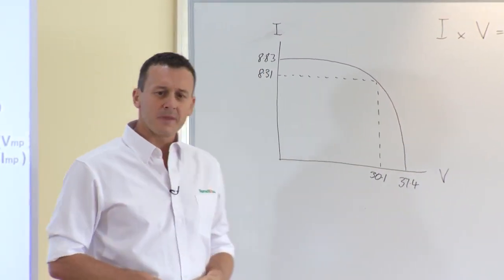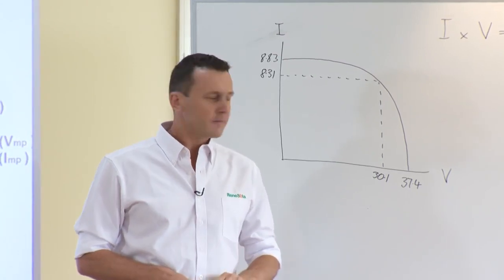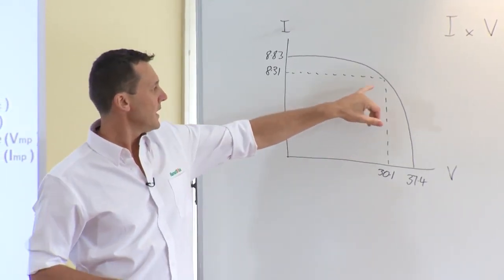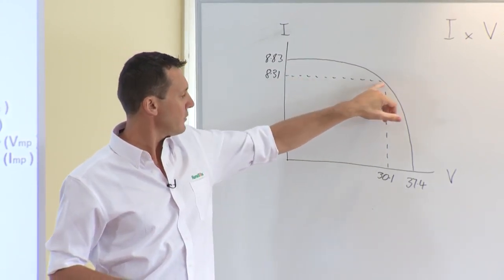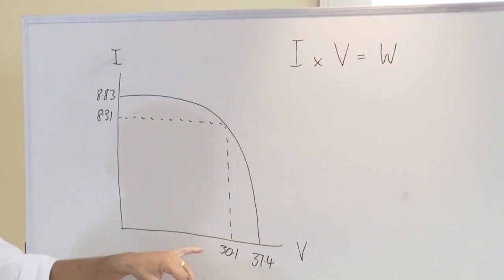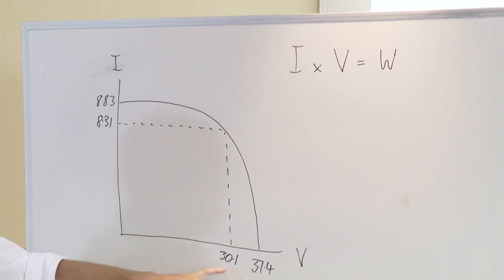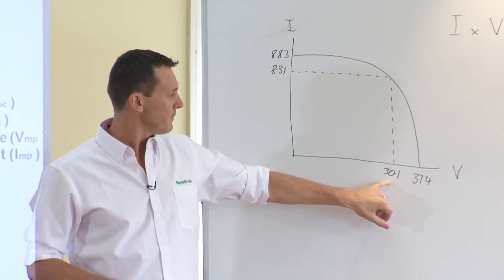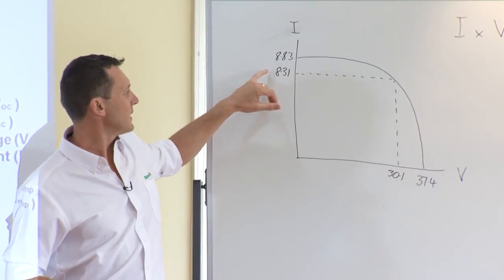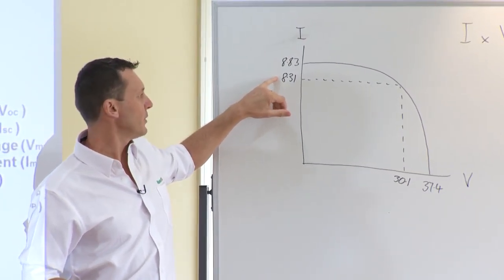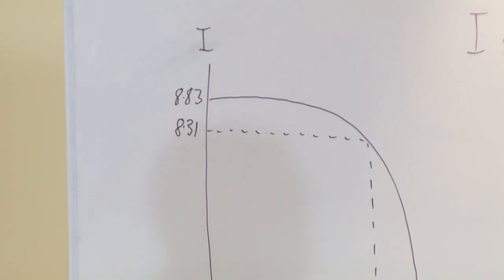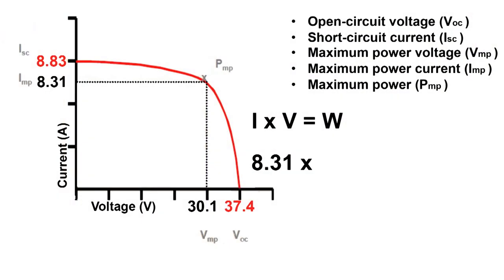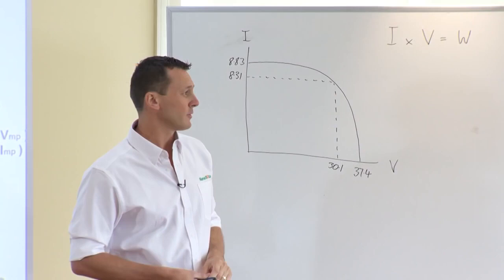So if we look at the maximum power point figures for that panel, it's drawing a graph like this where we can see the P max position for the voltage is 30.1 volts, and for the current the maximum is 8.31 amps. So if we use this formula up here and we multiply 8.31 by that 30.1 volts, then that will actually give us 250 watts. And that's where that maximum capacity of that panel comes into play.